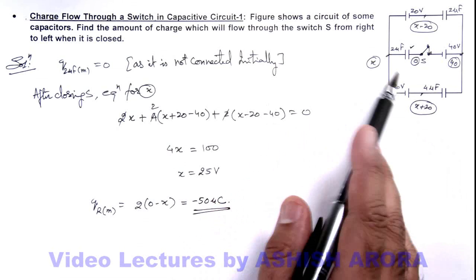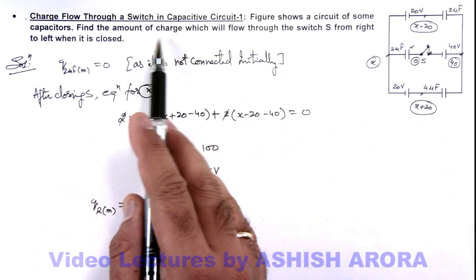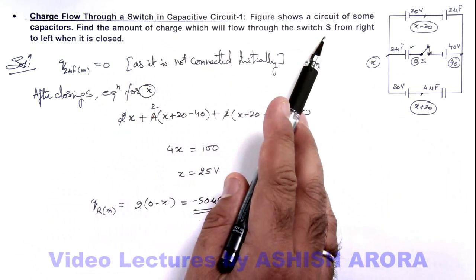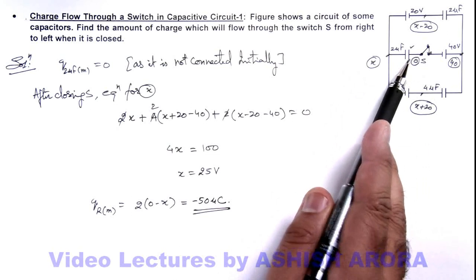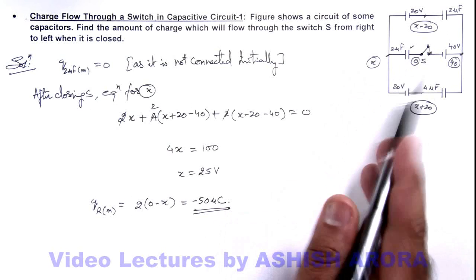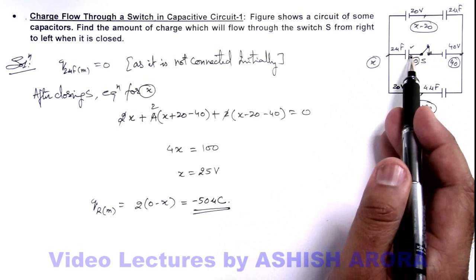Here it was having initially zero charge, and it is asking find the amount of charge which will flow through the switch S from right to left. So earlier this was having zero charge, finally it is having minus 50, so this is the amount of charge which has been flown from right of the switch to the left side on the right plate of capacitor.